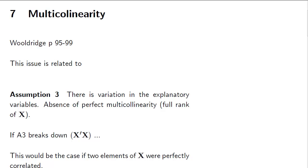We're going to talk about multicollinearity here, Chapter 7. The reading is in Wooldridge, which you're expected to read. The issue of multicollinearity refers to Assumption 3, the assumption that there was no perfect relationship between elements in X, so X was full rank.